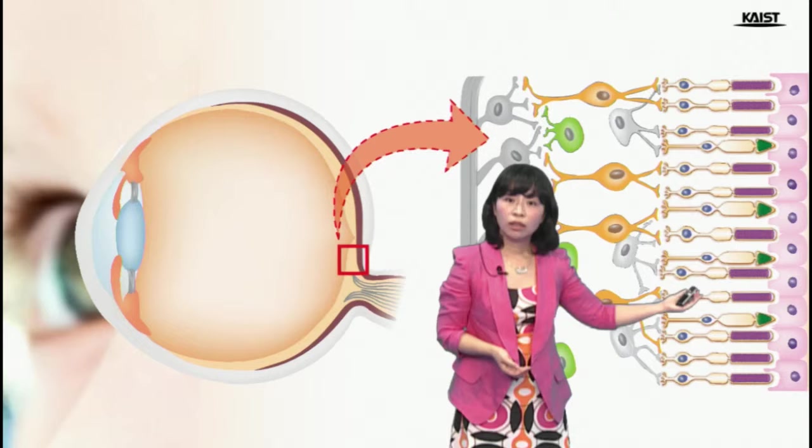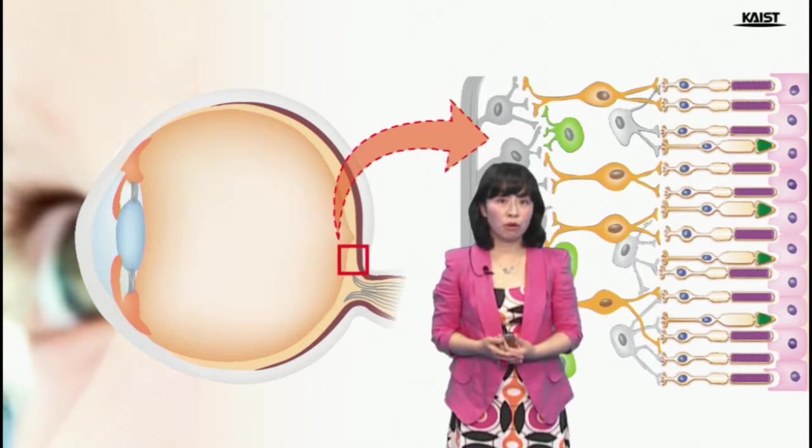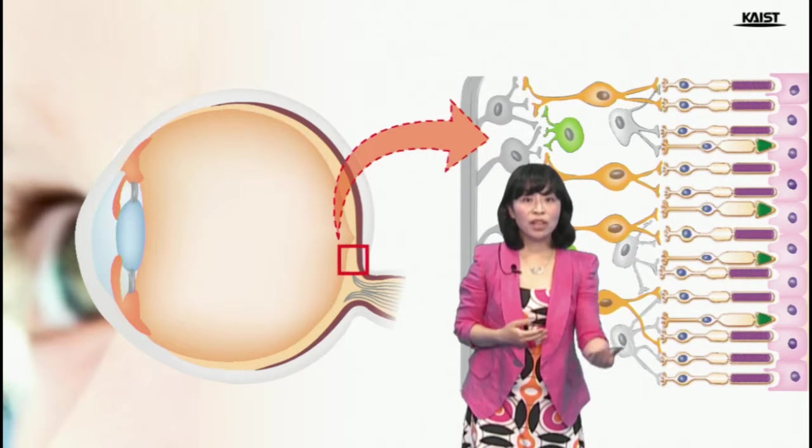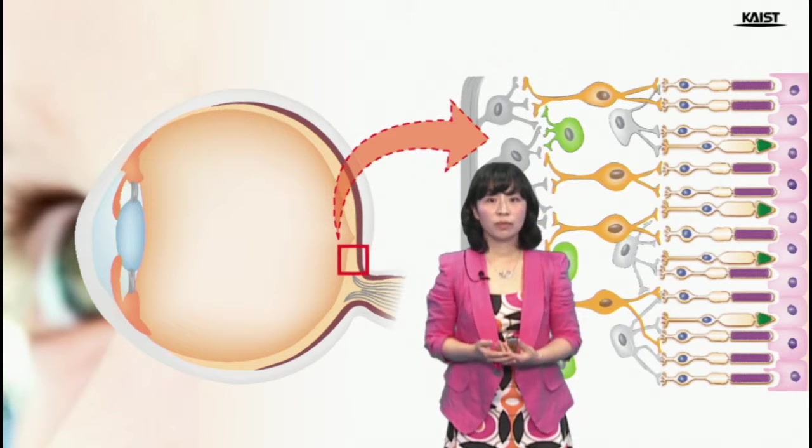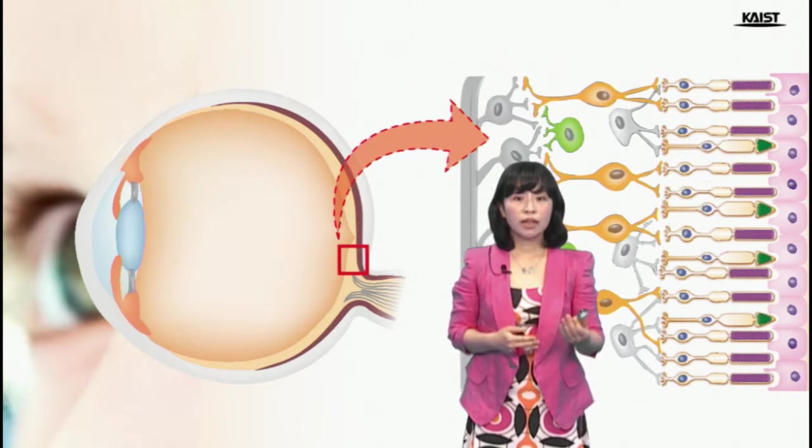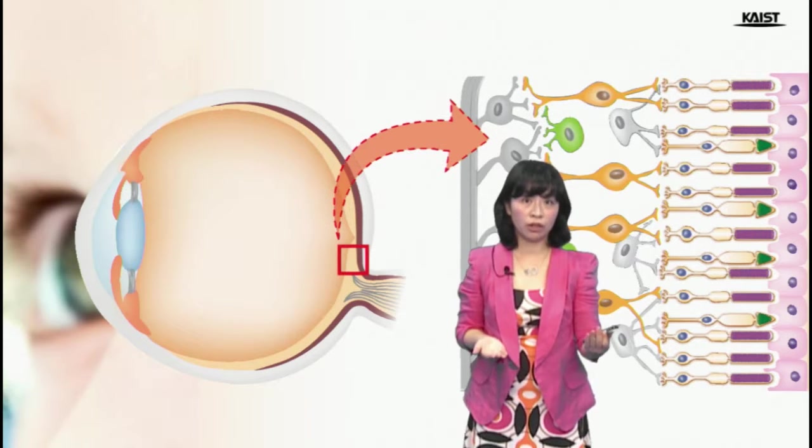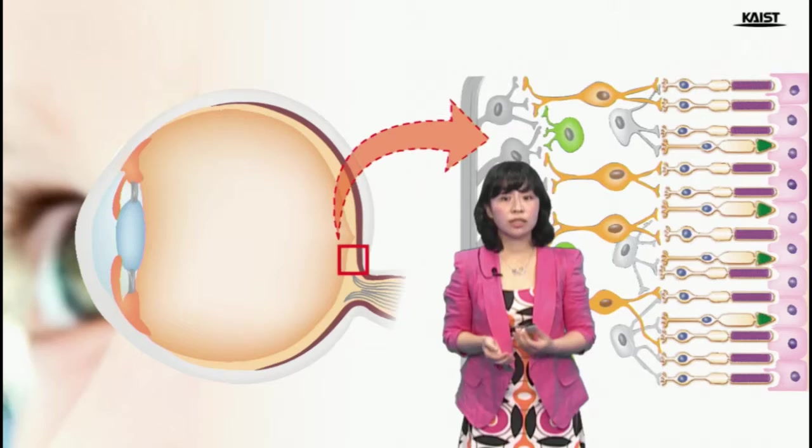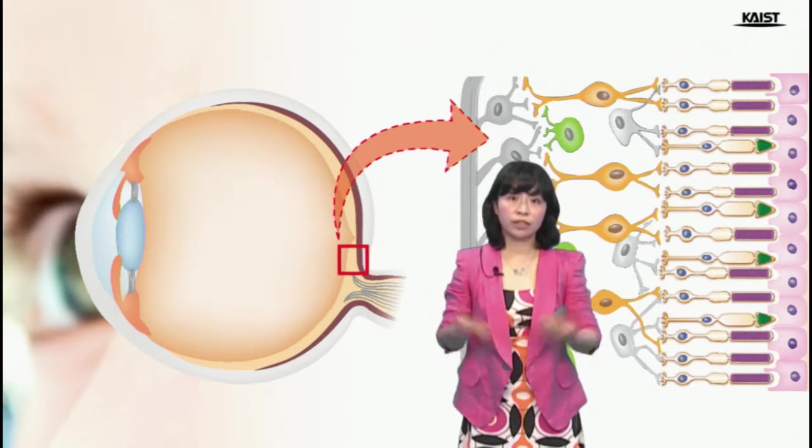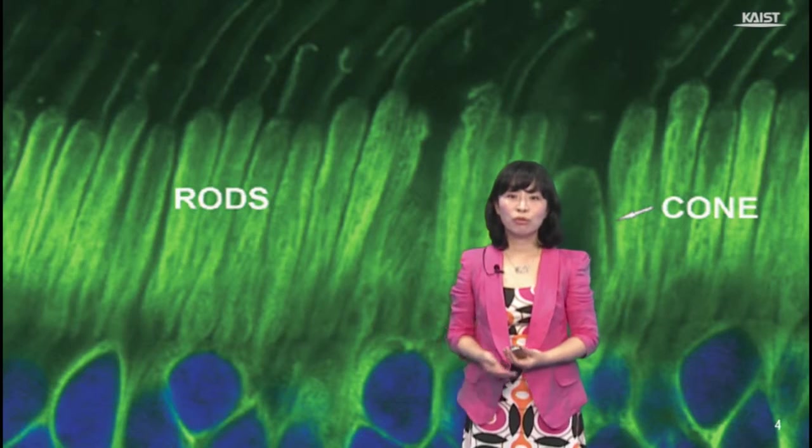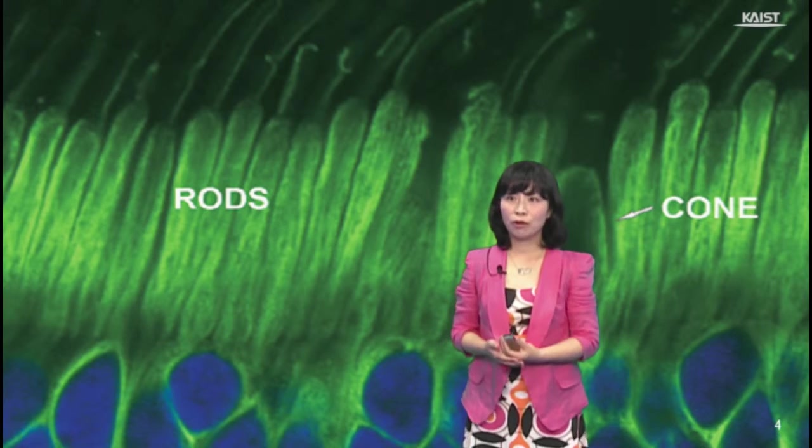As displayed here, rod cells look like rods, while cone cells look conic. They are named after how they are shaped. Basically, rod cells and cone cells are structurally and metabolically similar, but the functions of rods and cones are quite different. Here you go, the rods and cones in a real photograph.